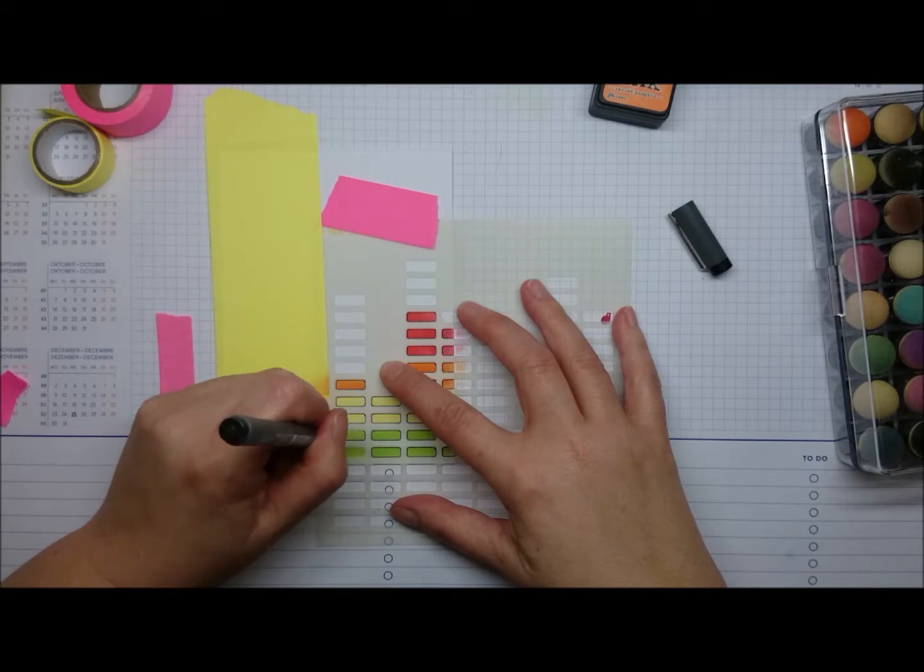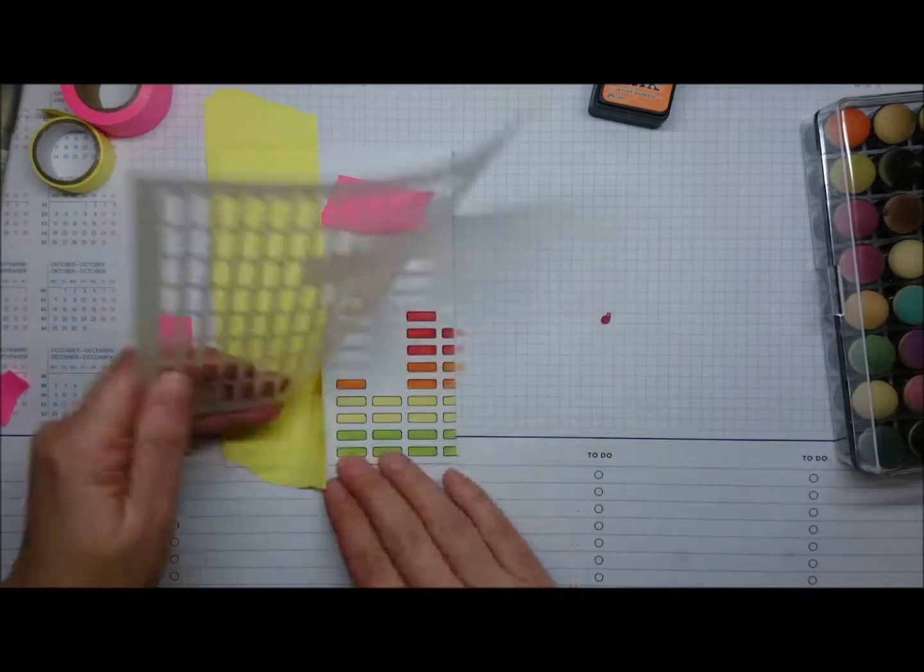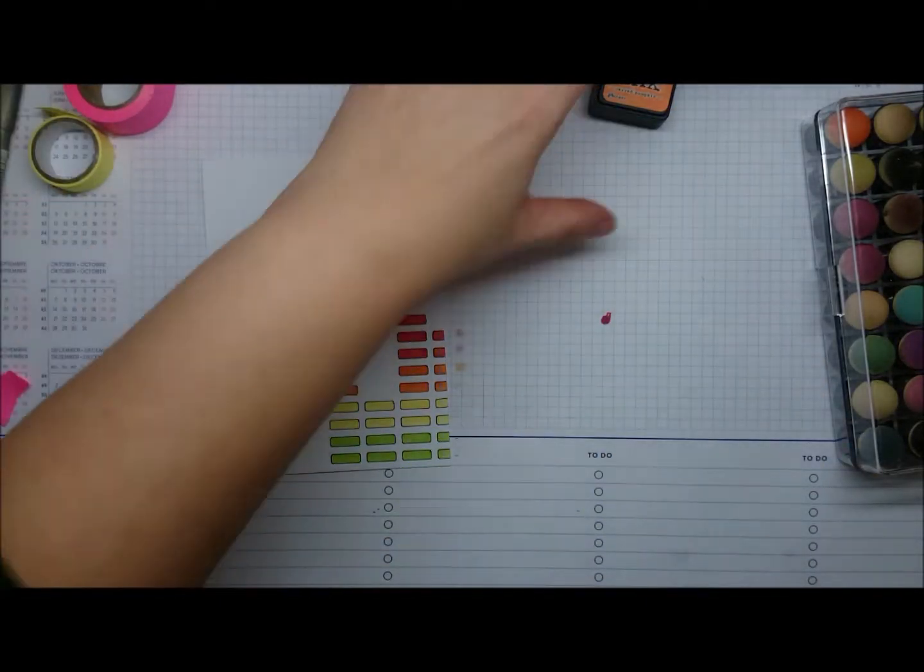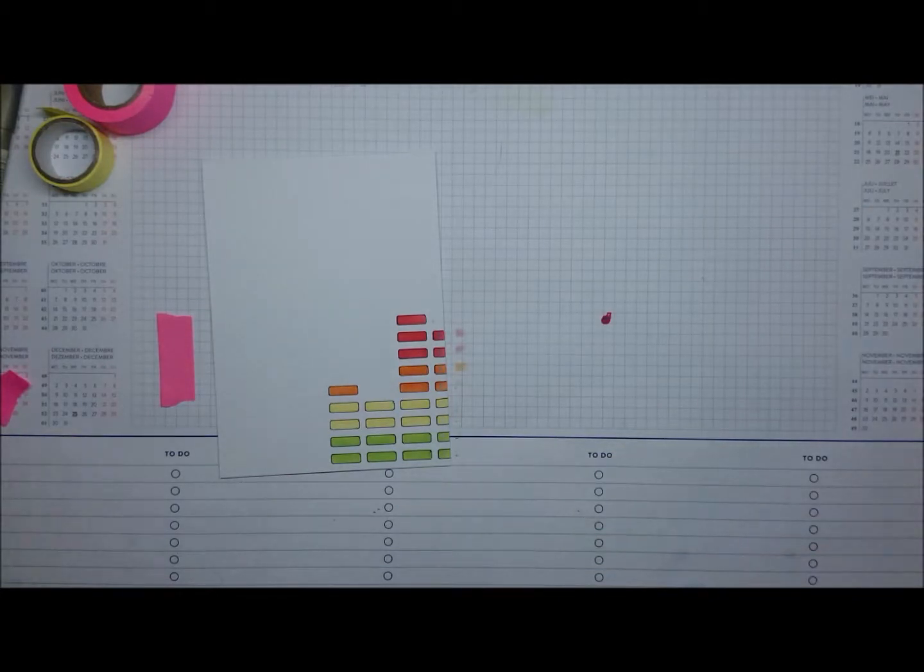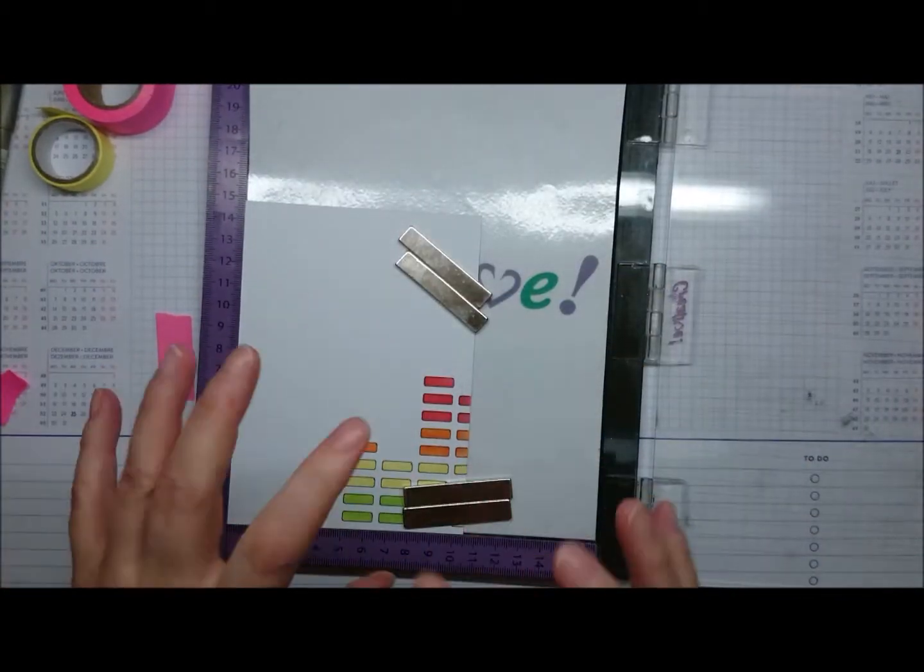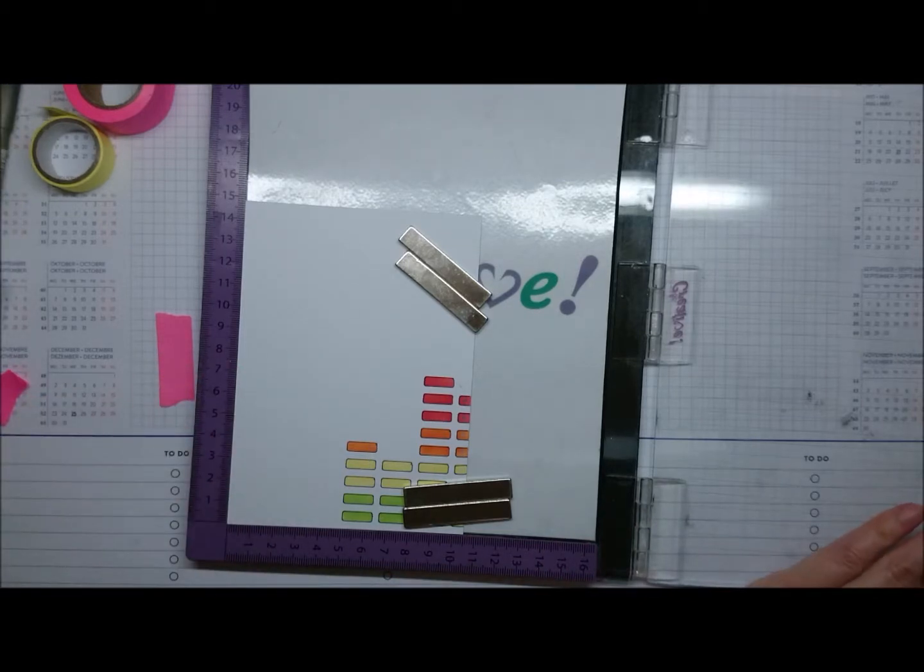Unico actually has a stamp that has the equalizer as well, a stamp set, but it was sold out at the moment I was doing my order so I got this one instead and I think that's equally as good. And for the sentiment I'm using the Your Next Stamps silly monsters rock stars.